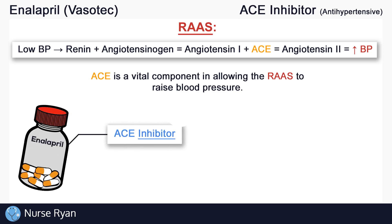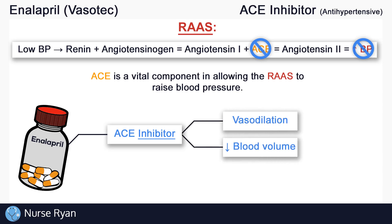Enalapril is an ACE inhibitor. ACE inhibitors bind to and inhibit ACE from working, which ends up inhibiting the RAA system. And if we inhibit the RAA system, we don't get any of those blood pressure raising effects — like the vasoconstriction or the increase in blood volume. This means that ACE inhibitors actually cause vasodilation and decrease blood volume, ultimately lowering blood pressure.